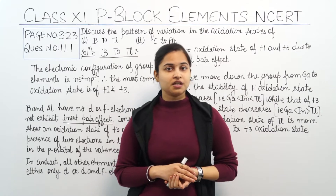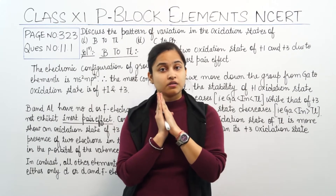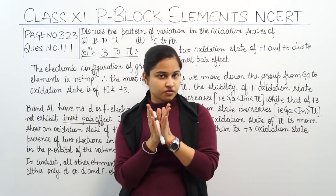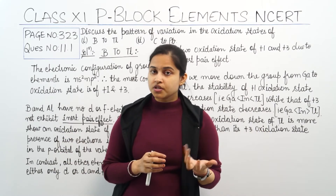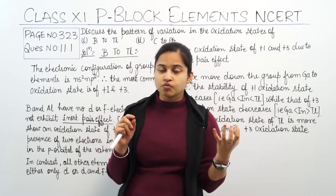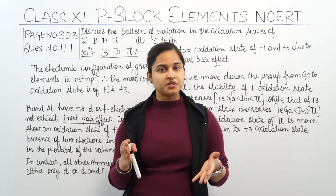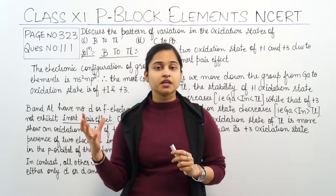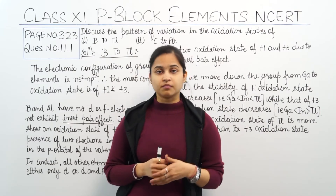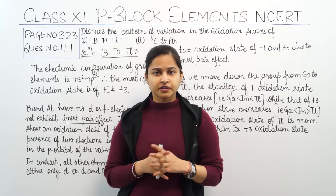The oxidation states observed will be +1 and +3. For the first two elements of the boron family — boron and aluminium — there are no D or F electrons. Therefore, the oxidation state of boron and aluminium is +3. But after aluminium — gallium, indium, and thallium — poor shielding effect, meaning ineffective shielding, comes into play.